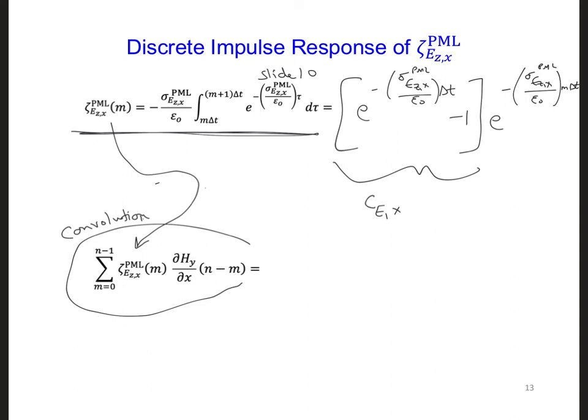Then we will get the summation m zero to n minus one and C ex, and we still have this, so e to the minus sigma ez x PML over epsilon naught m delta t, and then we have d hy dx n minus m.